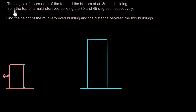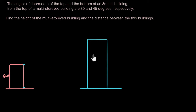If this building had been higher, then from here, one of the points would have had an angle of elevation and the other would have had an angle of depression. So both have an angle of depression — this is a taller building. The angles of depression are 30 and 45 degrees.